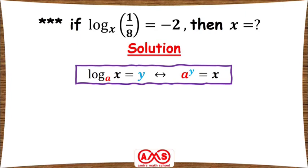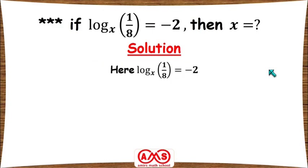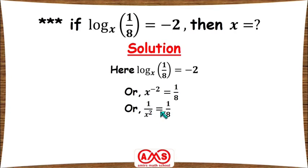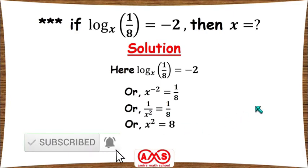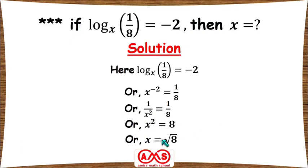Using log base a of x equal to y implies a to the power y equal to x, we convert log base x of (1/8) equal to minus 2. According to the conversion formula, we write x to the power minus 2 equal to 1/8. For x to the power minus 2 we can write 1 over x squared, so 1 over x squared equal to 1/8. Taking the reciprocal, x squared equal to 8, so x equals the square root of 8.